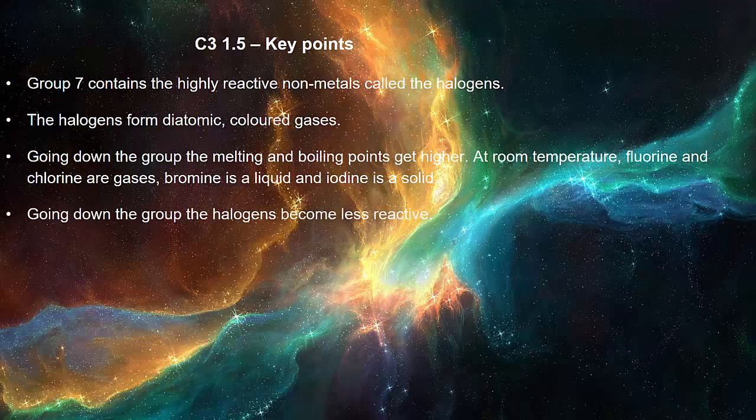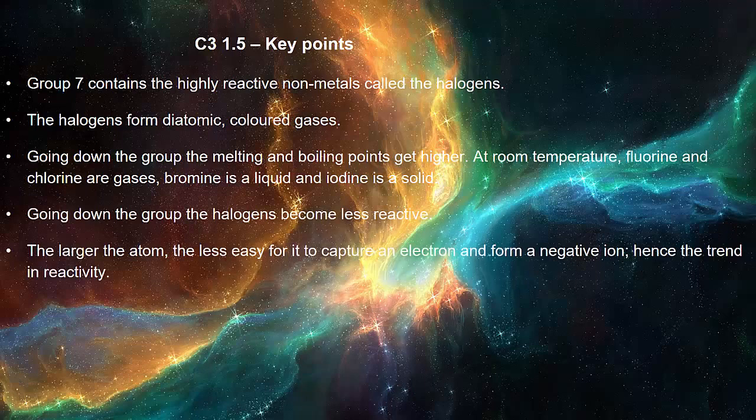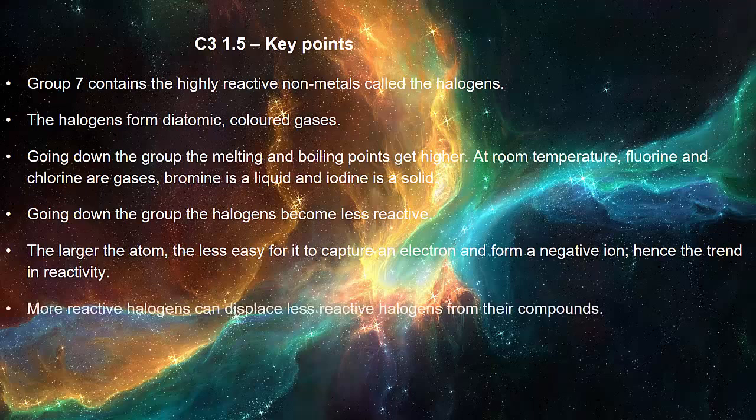Going down the group the halogens become less reactive. The larger the atom the less easy for it to capture an electron and form a negative ion, hence the trend in reactivity. More reactive halogens can displace less reactive halogens from their compounds.